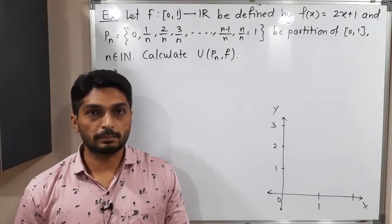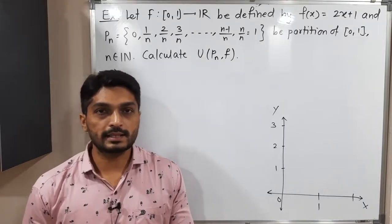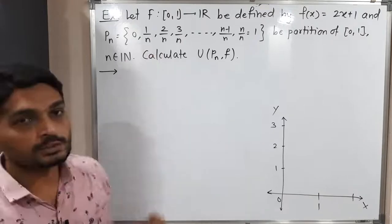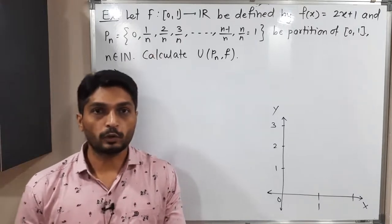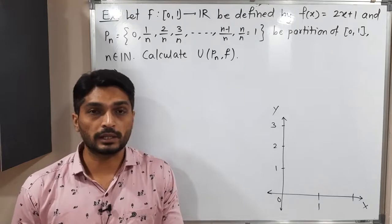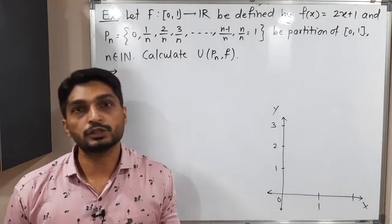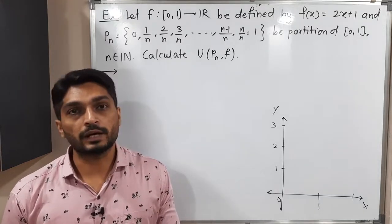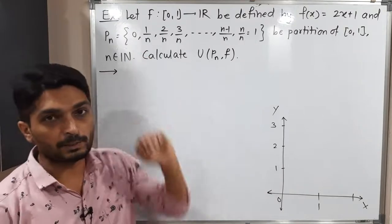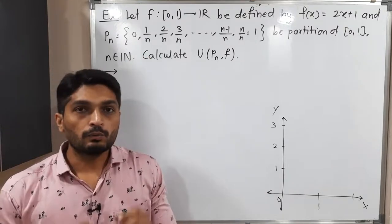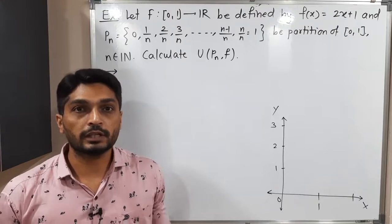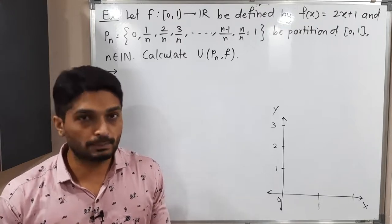Let us discuss this example. We have a function f defined on the closed interval [0,1], which is defined as f(x) = 2x + 1. A partition is given and we have to find the upper sum U(pn, f) with partition pn. First, we will draw the graph of that function and after that we will discuss its upper sum.